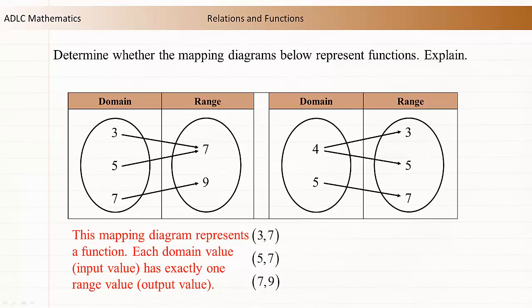The first mapping diagram represents a function. Each domain value, or input value, has exactly one range value, or output value.